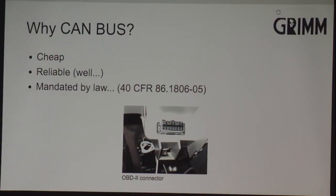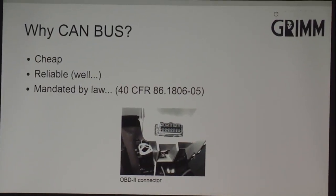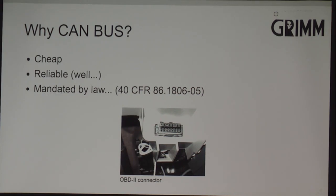So why CANBUS? Primarily, it's cheap — and it's cheap in a lot of different ways. The silicon to make it is fairly simple protocol; it doesn't take up a whole lot of silicon space on a chip to put a CAN peripheral on there. The transceiver is also a pretty simple piece of hardware. One of the primary cost savings, though, is that it allowed the auto manufacturers to save a ton of money on their wiring harnesses.